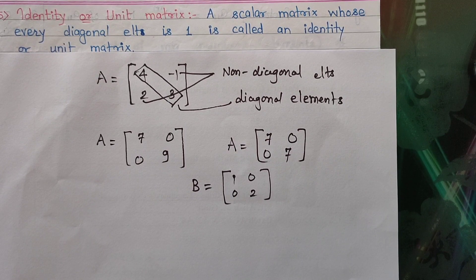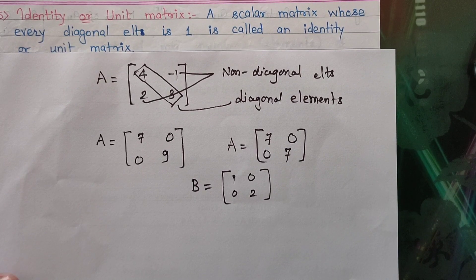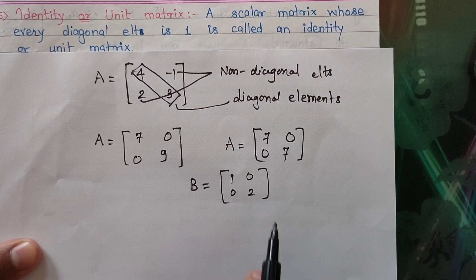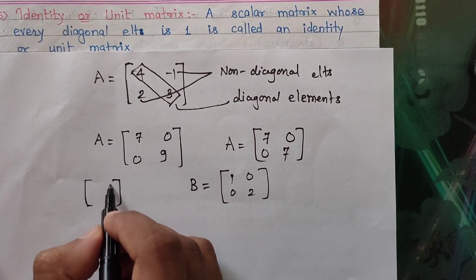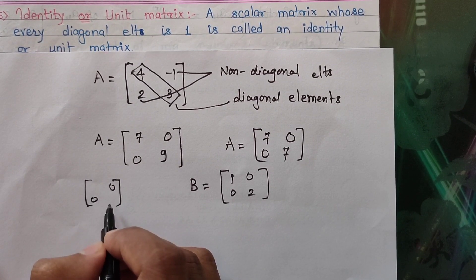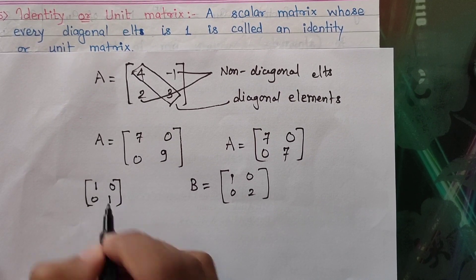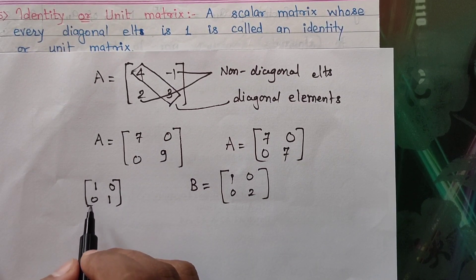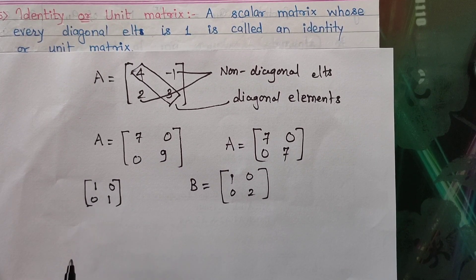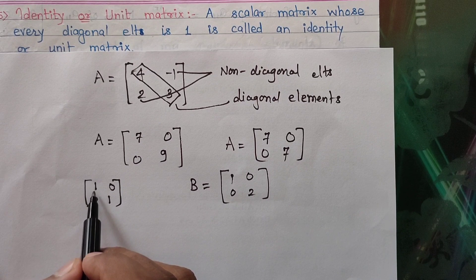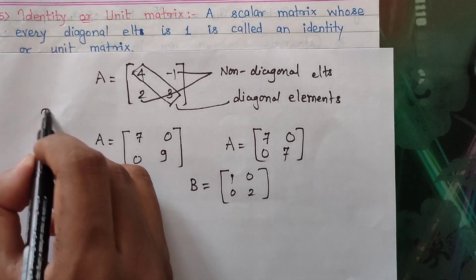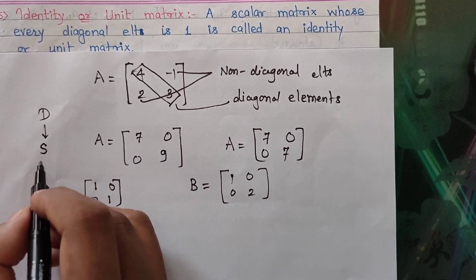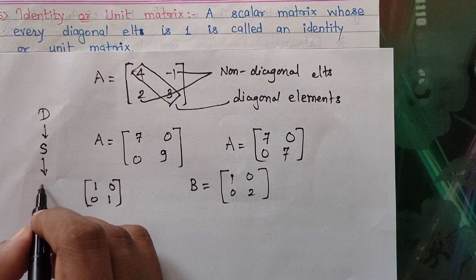The next definition is of identity matrix, also called unit matrix. It is a scalar matrix whose every diagonal element is 1. The condition is: non-diagonal elements are 0 and diagonal elements are all the same, but further restricted to be 1. So the identity matrix is a son of scalar matrix, and a grandson of diagonal matrix.